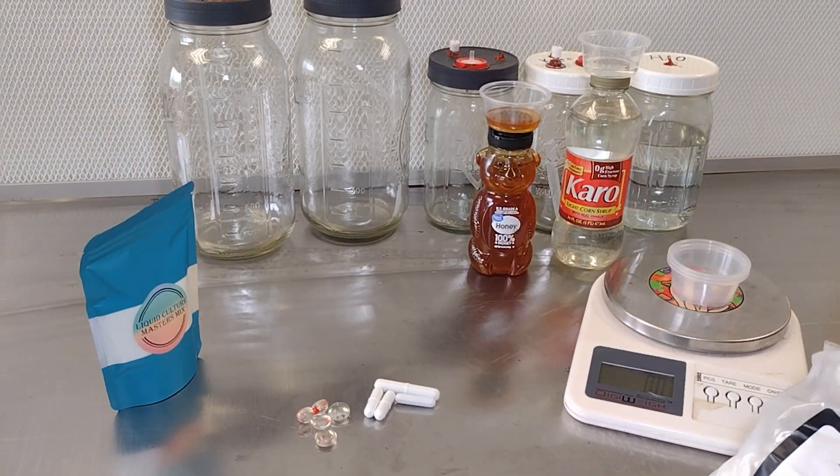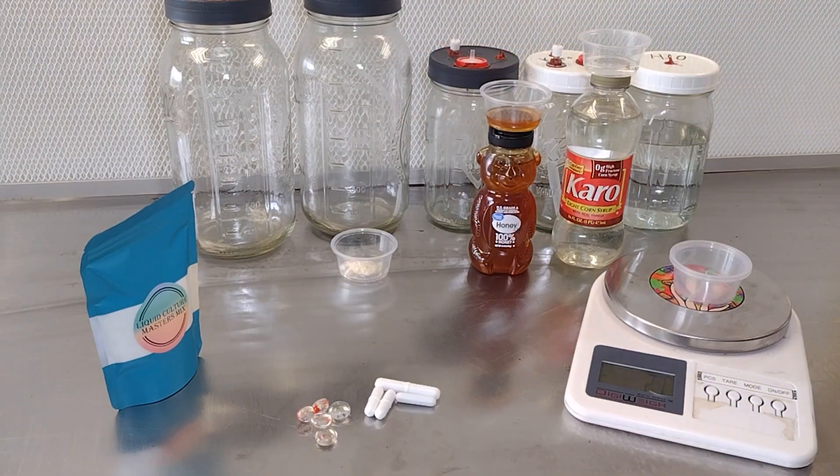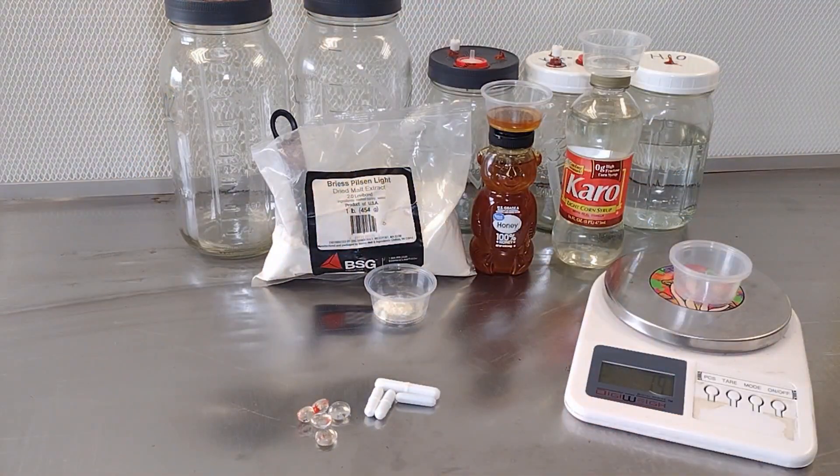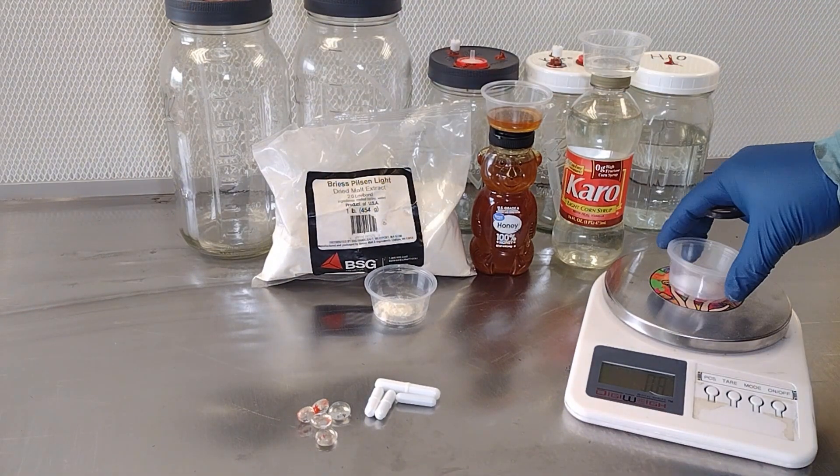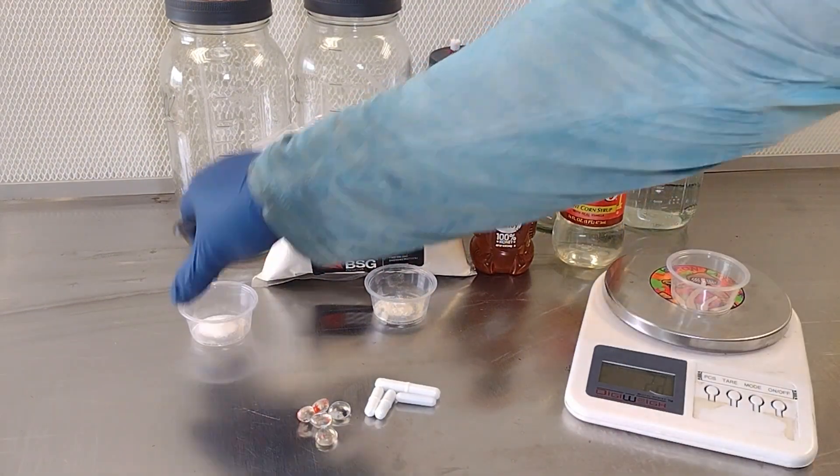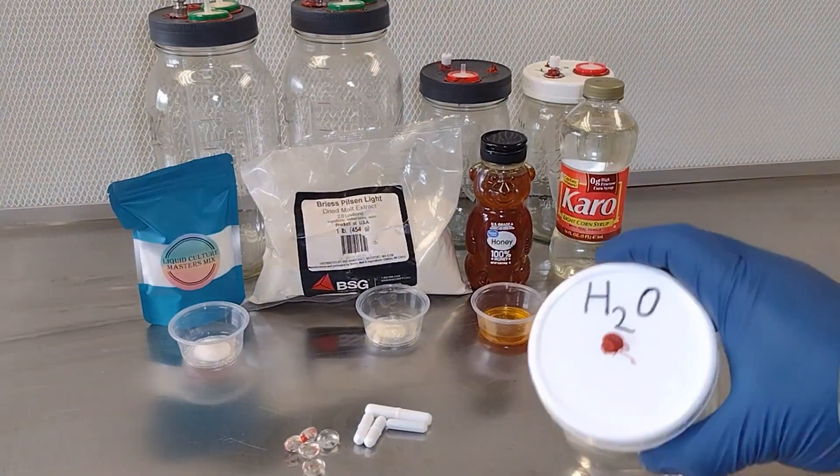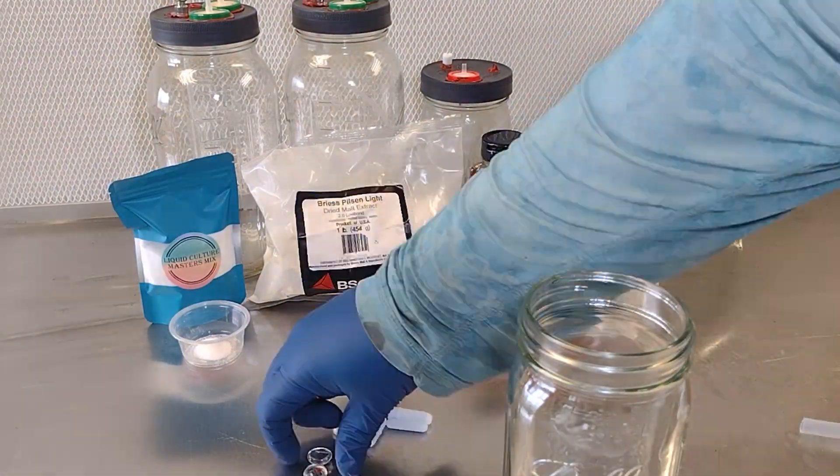Next I'm going to be using the light malt extract, and I'm going to be weighing out 1/4 teaspoon, which is about a gram. So you'll use a gram of malt per 500ml, same thing with the master's mix, 1 gram per 500ml.